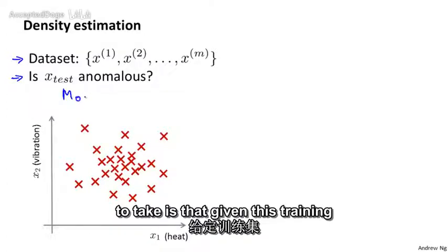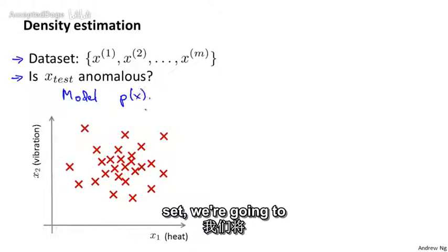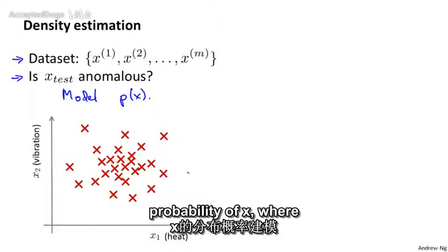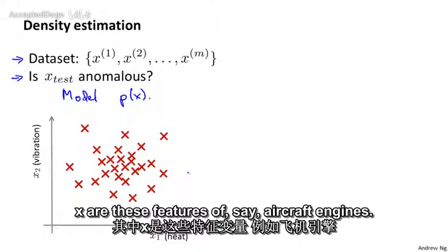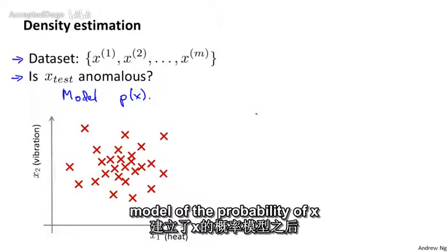The approach that we're going to take is that given this training set, given the unlabeled training set, we're going to build a model for P of X. In other words, we're going to build a model for the probability of X, where X are these features of say aircraft engines.